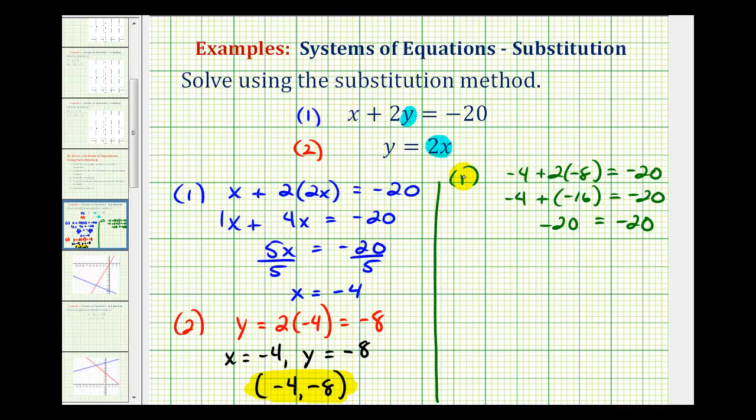But we also need to verify this ordered pair would satisfy equation two, where y is equal to 2x, so we'd have negative eight equals two times negative four, which also checks.